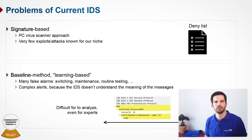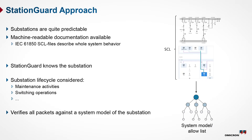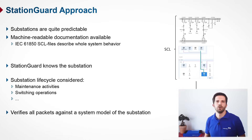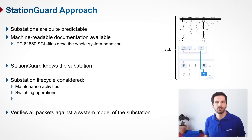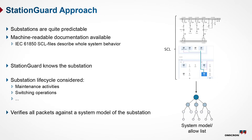With Station Guard we used a different approach, leveraging the fact that substations and the power grid in general are quite predictable. With substations according to IEC 61850, we have the advantage of machine-readable documentation of the whole substation and its communication, in so-called SCL files. The intrusion detection system Station Guard reads these files, learns the behavior of the substation, and compares each and every packet in the communication against this system model, precisely detecting what is right and wrong in the communication.